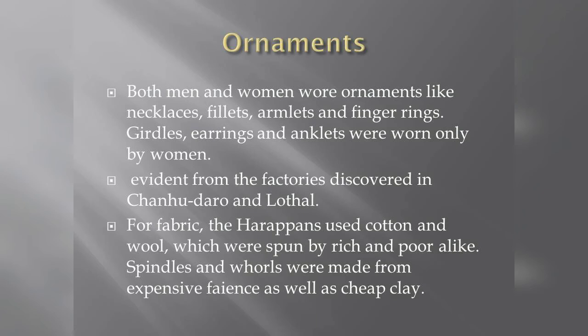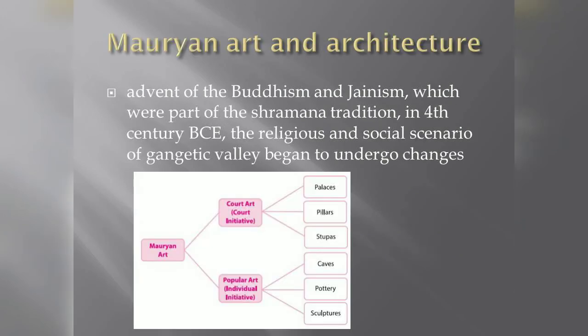There were ornament factories. Moving to Mauryan art and architecture, there are two kinds of court art. The main elements are palaces, pillars, and stupas, which are very important features of this period.